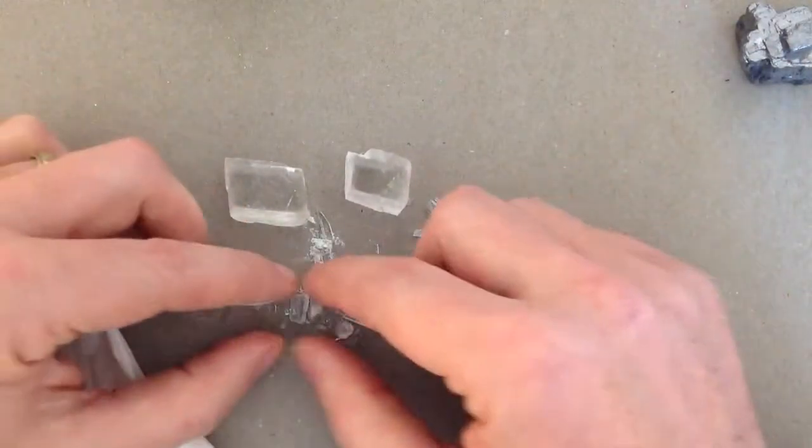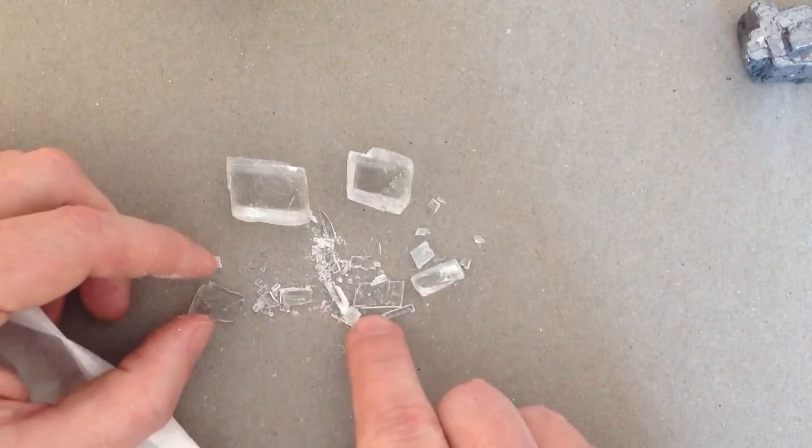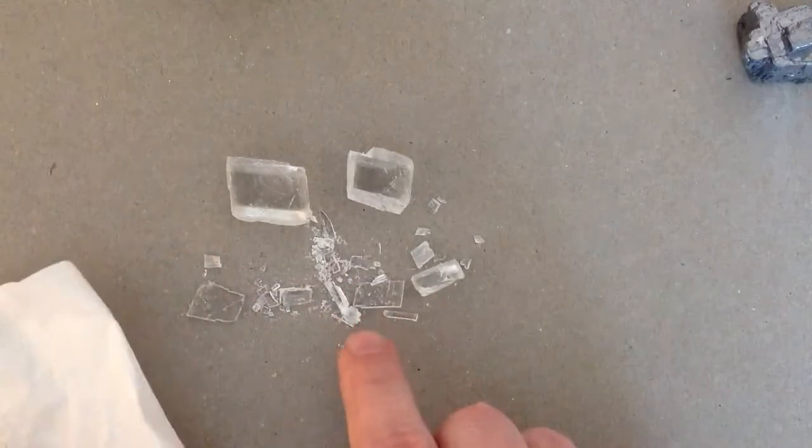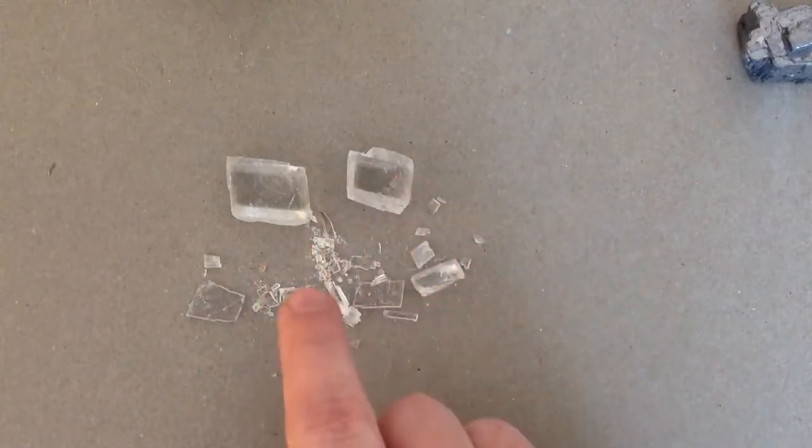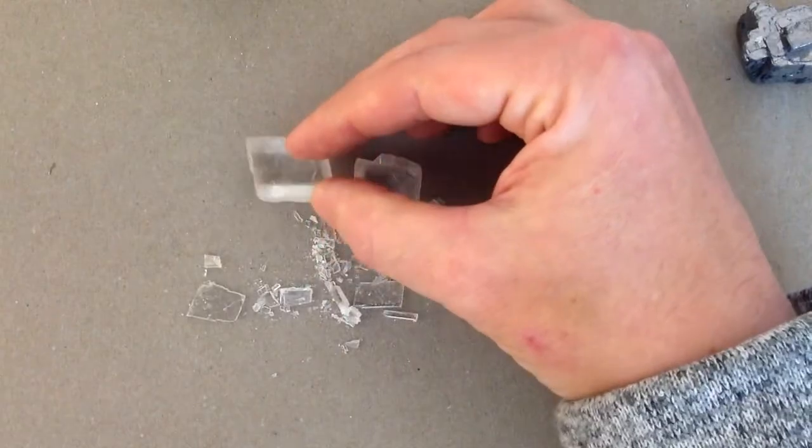So these pieces, even the little shards right down here at the bottom, they all look like the original sample because the way the atoms have bonded themselves together with the calcite allows it to break along these flat surfaces. That is cleavage.